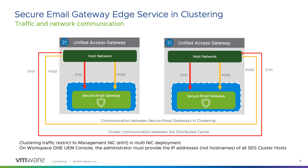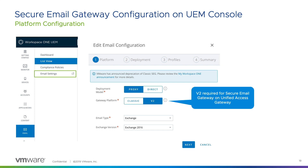On the Workspace ONE UEM console, it's important to note that when configuring clustering — in the past when deploying Secure Email Gateway on a Windows server you could specify a host name or IP address — now when deploying Secure Email Gateway through Unified Access Gateway, you must provide the IP address. When using multiple NICs, that IP address must be the management NIC's IP address. Host names are not supported; it must be the IP address.